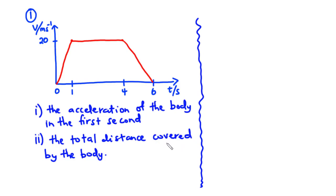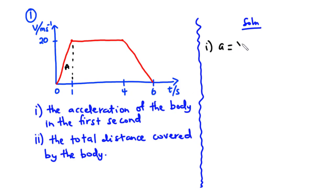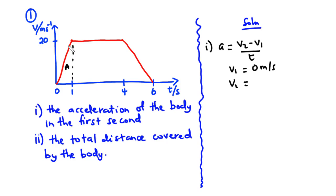So for part i we have to find the acceleration of the body in the first second. We are going to consider this triangle — from zero to one second, that is the first second. We all know that acceleration is the change in velocity with respect to time. Let v2 be the final velocity and v1 be the initial velocity. At time zero seconds, the initial velocity v1 is zero meters per second, and at time one second, the velocity v2 is 20 meters per second.